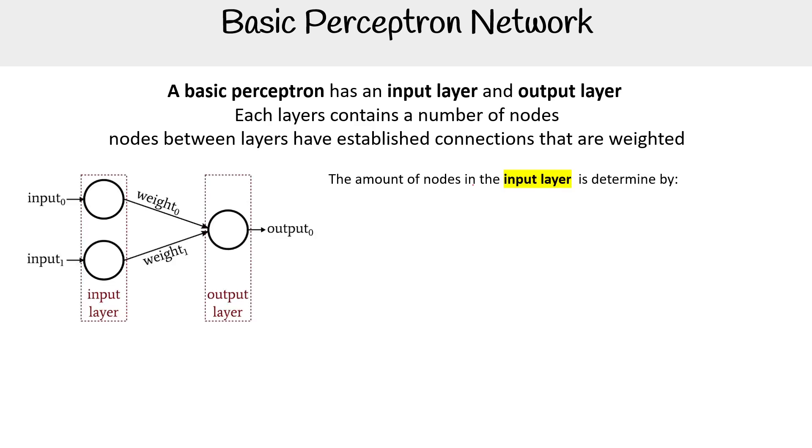So here is that example. The amount of nodes in the input layer is determined by the number of dimensions of the input vector. What does that mean?